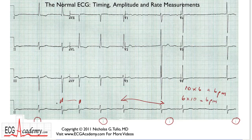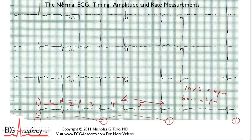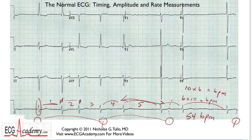Find a QRS more or less close to one of the three-second marks. This is three seconds and this is six seconds. Count the R-to-R intervals in six seconds: one, two, three, four, five — maybe five and a half. That gives a rate of about 54 beats per minute. If you measure a different segment, you might get 42. This is a challenging ECG because the rate is so tremendously variable. But it gives you a tool — a way of measuring grossly irregular heart rates using these three-second marks.